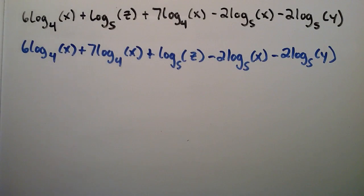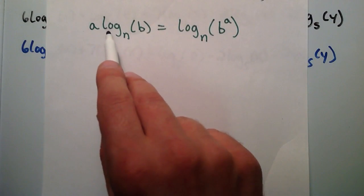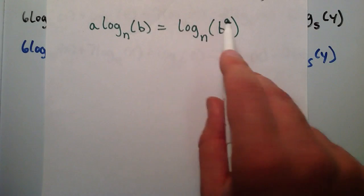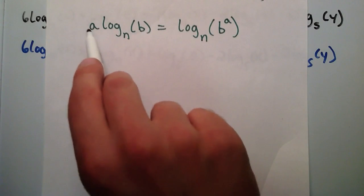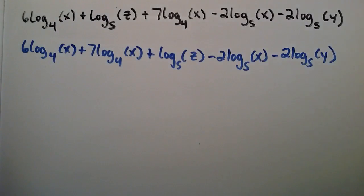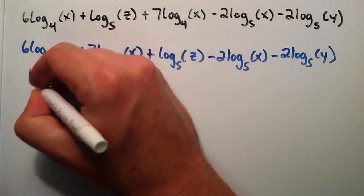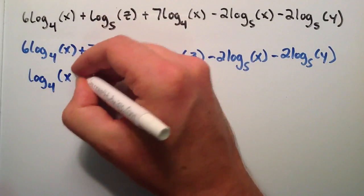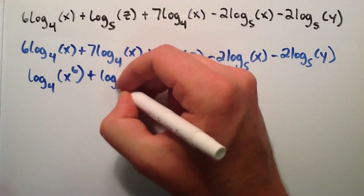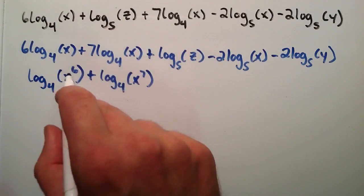The first thing we want to look at is the third property: if you have some number multiplied by log base n of b, that's equal to log base n of b raised to that number. You're essentially taking the number out front and putting it in the place of the exponent inside the argument. So here we can do that with the 6 — this becomes log base 4 of x to the 6th — and the same with the 7, giving us log base 4 of x to the 7th.